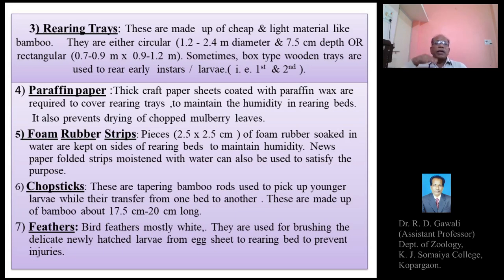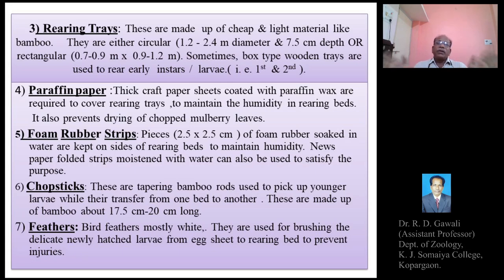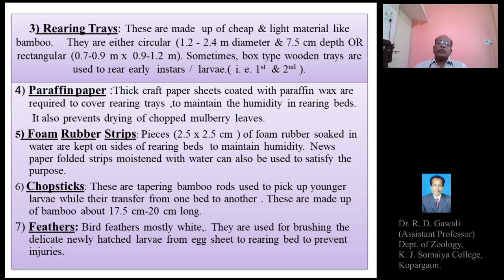The paraffin paper serves two purposes: maintaining humidity of 75 to 85 percent in the rearing tray and preventing drying of chopped mulberry leaves, so the leaves remain fresh until feeding. Four small water-soaked foam rubber strips are also kept in the four corners of the rearing tray to further maintain humidity.